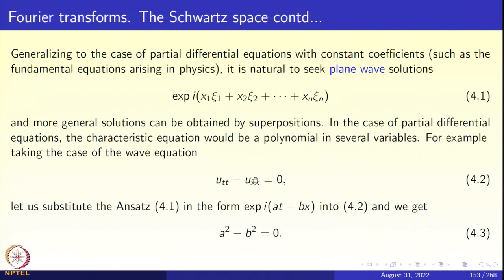Recall that u_tt denotes ∂²u/∂t² and u_xx denotes ∂²u/∂x². Substituting the ansatz 4.1 into the differential equation, with n = 2 variables x and t, we take the ansatz in the form exp(i(at − bx)), so the frequency vector is (a, −b). Substituting into the wave equation gives the condition a² − b² = 0.